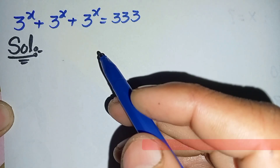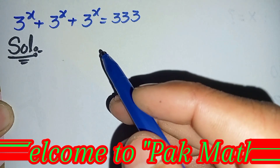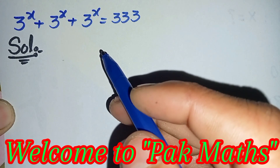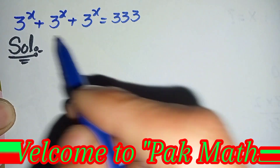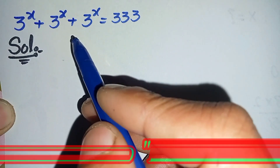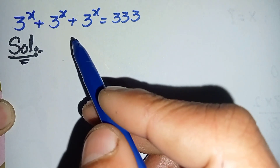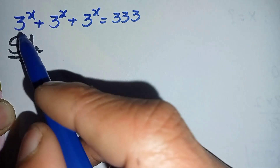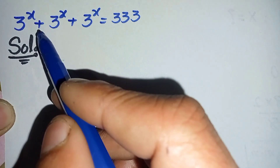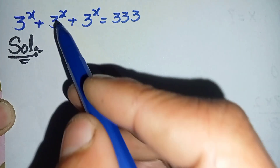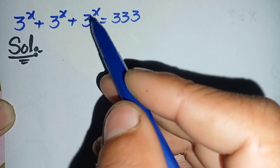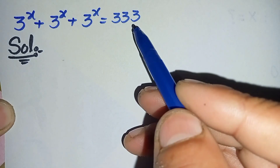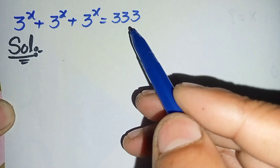Hi everyone, welcome back to ParkMaze. In this video I am going to solve this nice and interesting exponential math problem: 3 raised to power x plus 3 raised to power x plus 3 raised to power x is equal to 333.